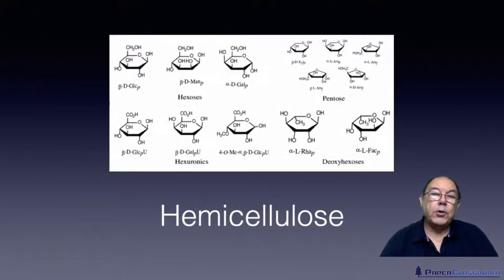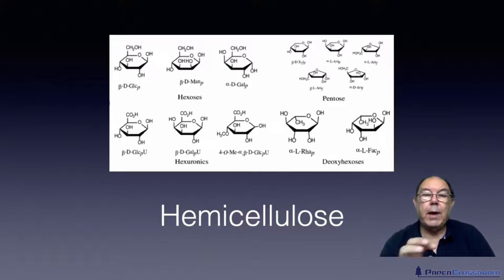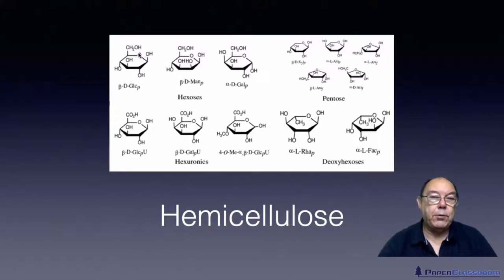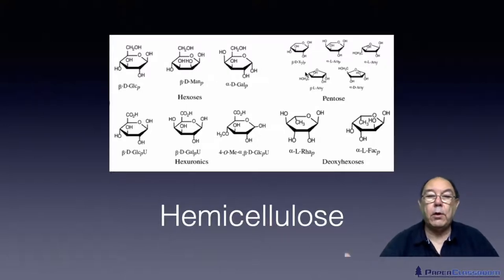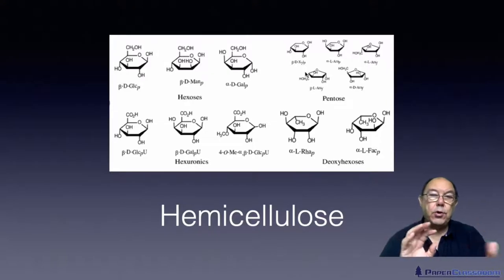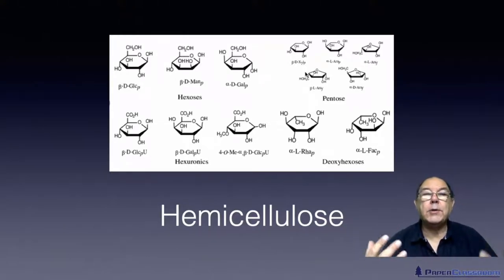Whereas cellulose was just one molecule — glucose — repeated many hundreds or thousands of times, there are also a lot of other types of sugar molecules. If we have six members in a ring — five carbons and an oxygen — we call that type of sugar a hexose. And if we've got only five atoms in a ring, then we call those pentoses. Hemicelluloses usually consist of two or three sugars joined together, and they're quite small molecules — because they're small, they are completely soluble.